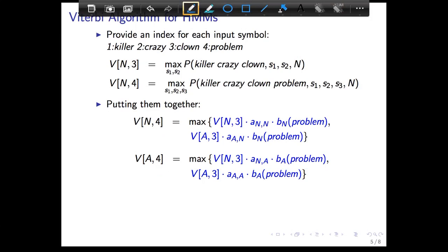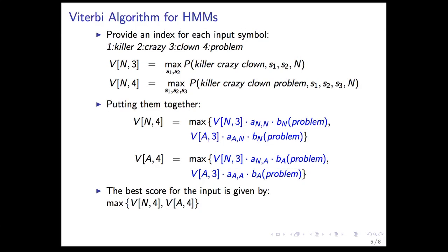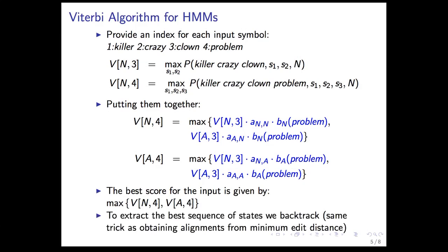The table always takes the max between the two incoming paths — for reaching a noun or adjective it's a max between two options and doesn't greedily pick either. The best overall score is the max of the final column: is it better to end in a noun or adjective for the last symbol 'problem'? To extract the best sequence of states, we backtrack — the same trick as getting alignments from the minimum edit distance matrix.